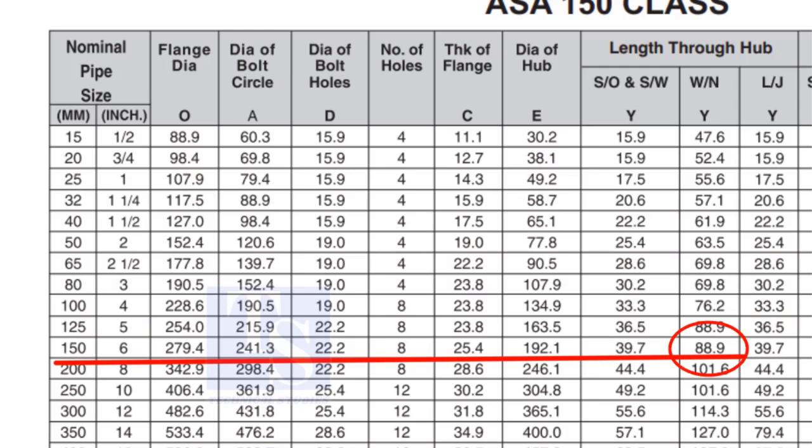Check the height of the flange in the table. Since the pressure rating is 150, the height of the flange is 88.9mm. Note down the height.